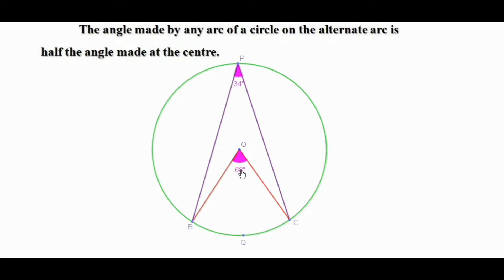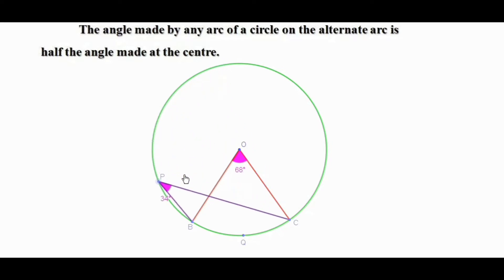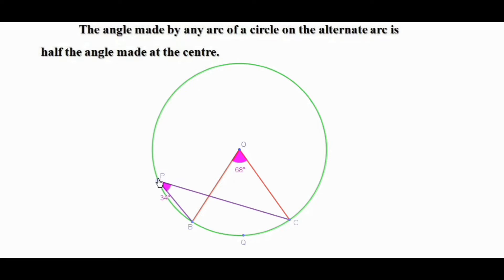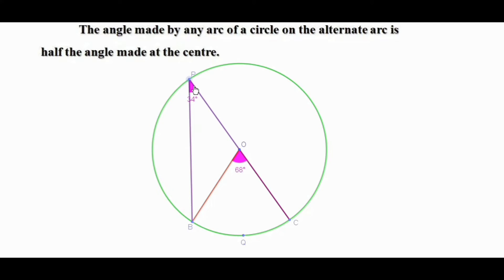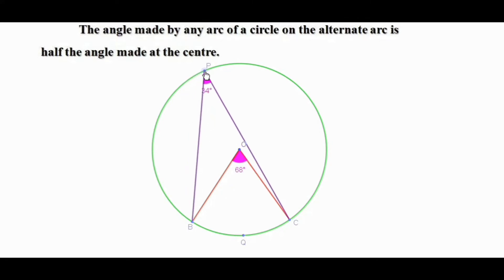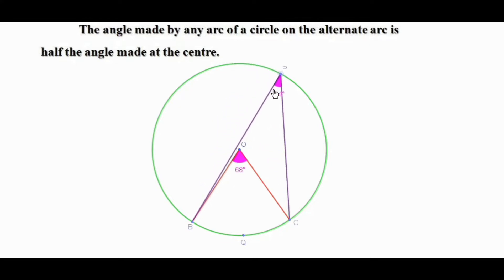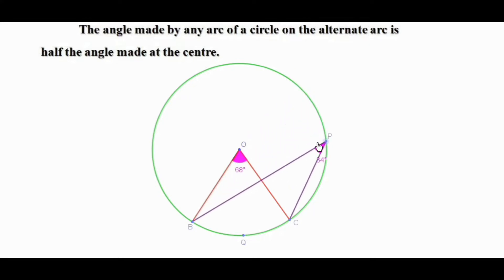Let us look at the different situations. This point P can be anywhere on the alternate arc. See the different figures — P can be in various positions on the arc BPC. In all these figures, the angle at P is half the central angle.